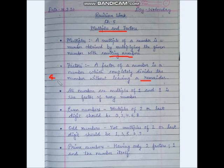That means we divide by checking numbers, and if the remainder is 0, those numbers are called factors. Also, all numbers are multiples of 1, and 1 is the factor of every number.